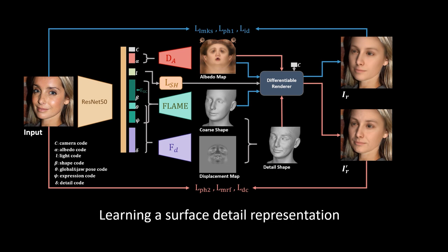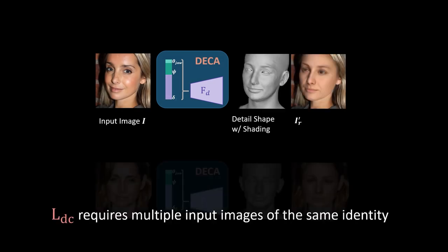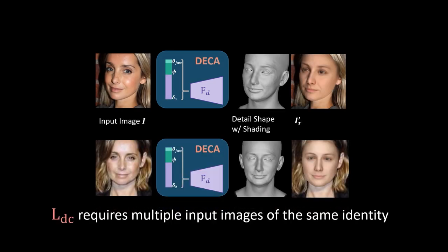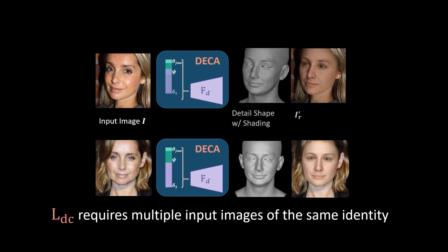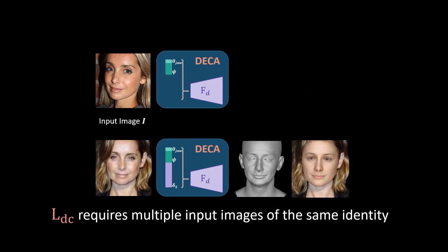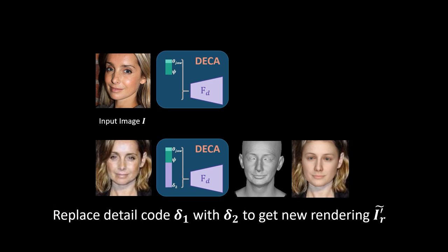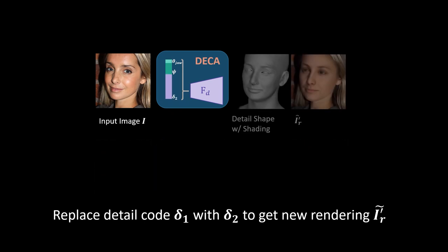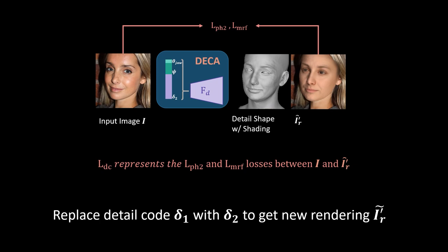We introduce a novel detail consistency loss to enforce expression detail disentanglement. This detail consistency loss exploits the assumption that detail code for an individual remains constant even if expression changes. If we take the detail code for one image of a person and replace it with the detail code from another image of the same person in a different expression, then this should have no effect on the rendered image. This loss is defined relative to the input image and the new rendered detail facial image.